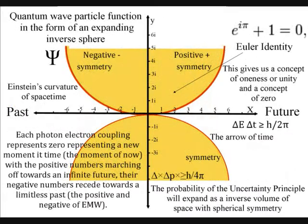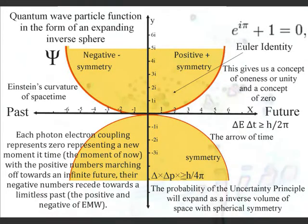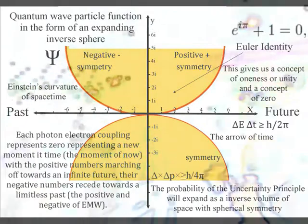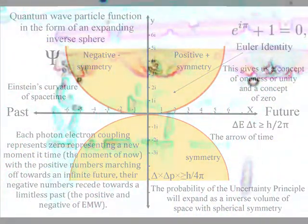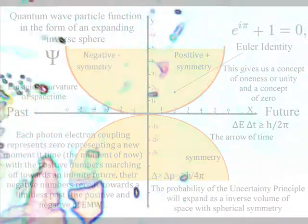Each photon-electron coupling represents zero, representing a new moment in time, the moment of now, with the positive numbers marching off towards an infinite future and the negative numbers receding towards the limitless past, the positive and negative of electromagnetic waves.